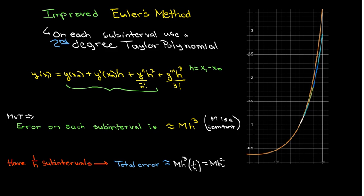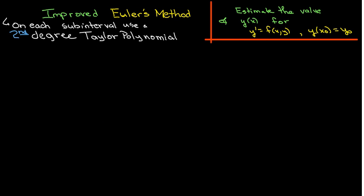And so if I take h to be 0.1, I would expect that the total error would be bounded by some constant times 0.001.